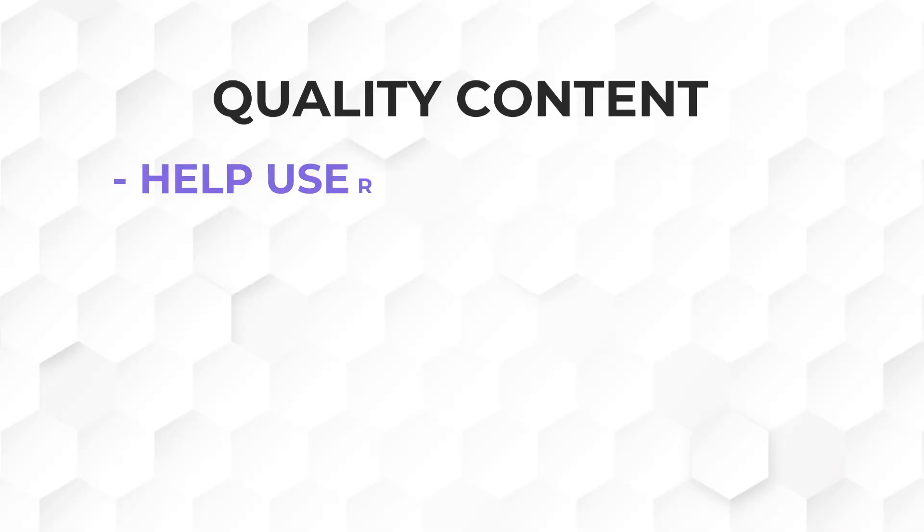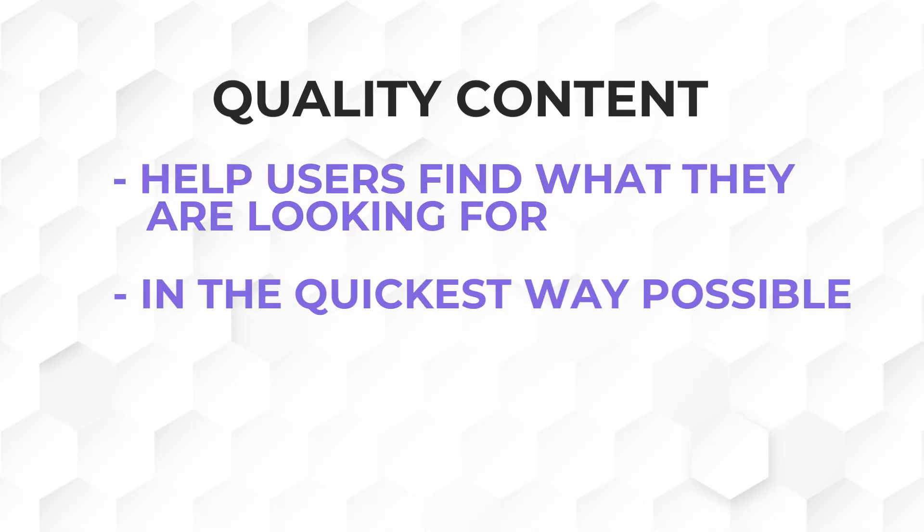Quality content is a huge blanket that covers many aspects of SEO, but what Google is really looking for is content that helps users find what they are looking for in the quickest way possible. For example, the keyword 'how to tie a tie' — if Article A goes straight into a step-by-step tutorial with only 600 words, and Article B has 2,500 words covering the history and theory of a tie before the tutorial, most of the time Article A will perform much better. Quality content is all about how well users perceive your content — it is not about the search engines.